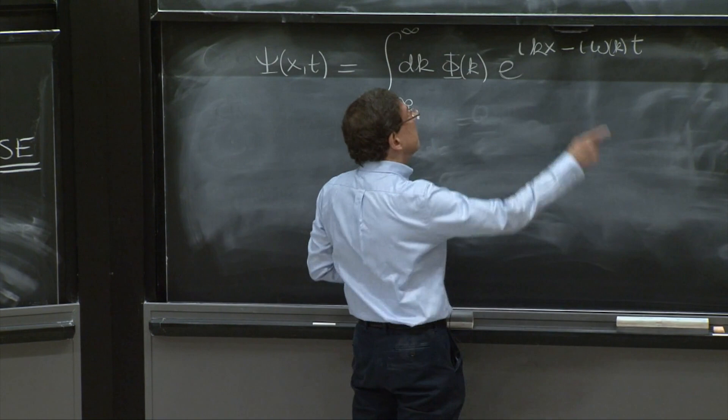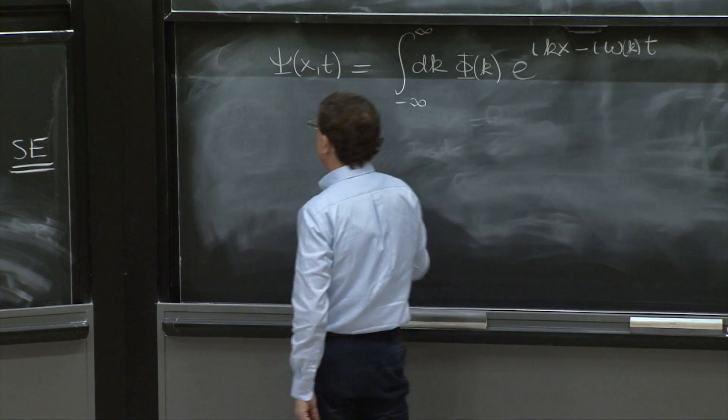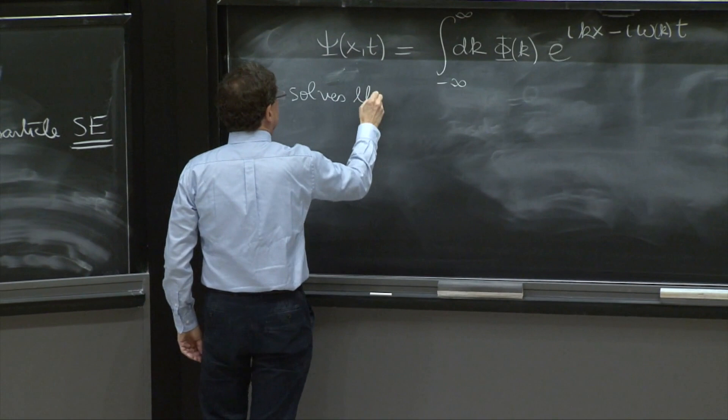From the relation omega minus k equals 0, you'll get a 0. And therefore, this whole thing solves the Schrodinger equation.